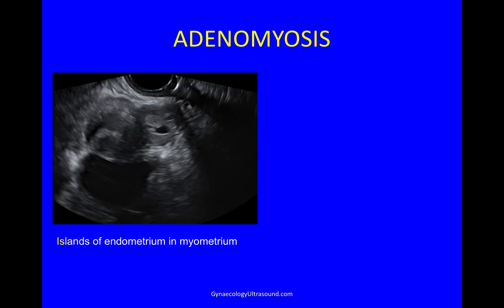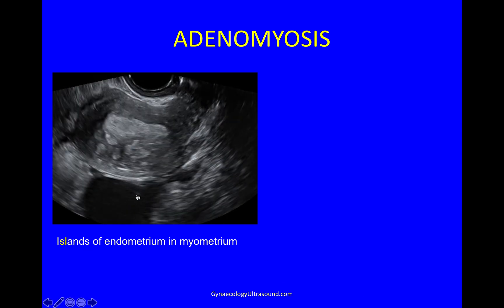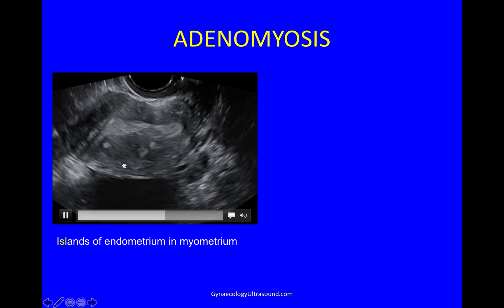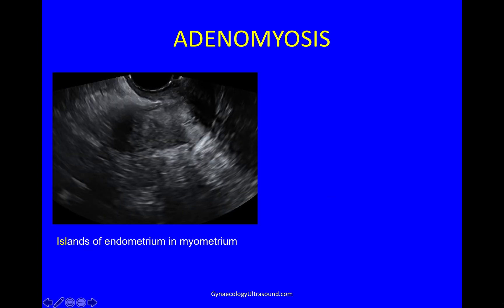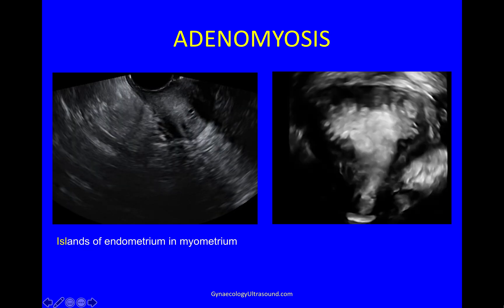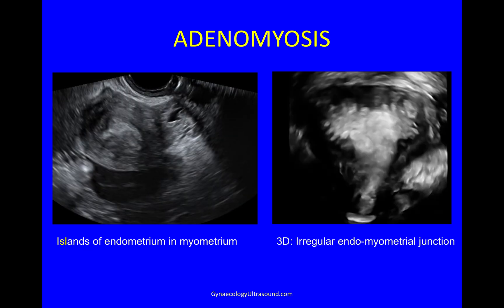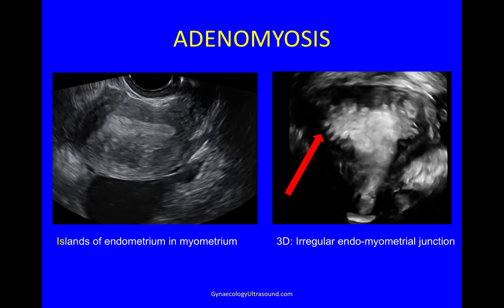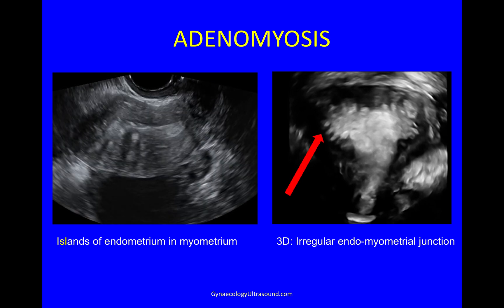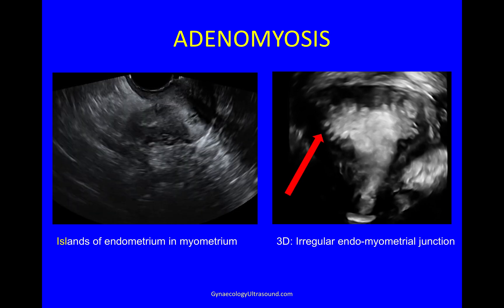In some cases of adenomyosis, you can see islands of endometrium in the myometrium, and on 3D you see an irregular endomyometrial junction with budding of the endometrium into the myometrium.